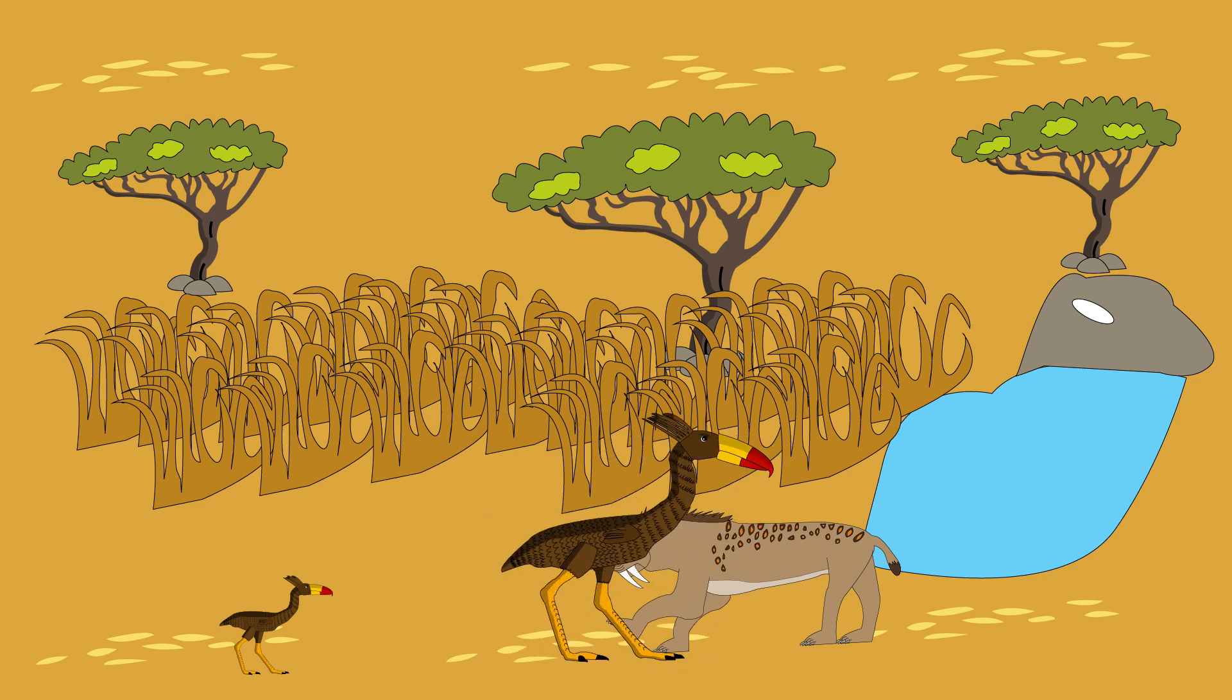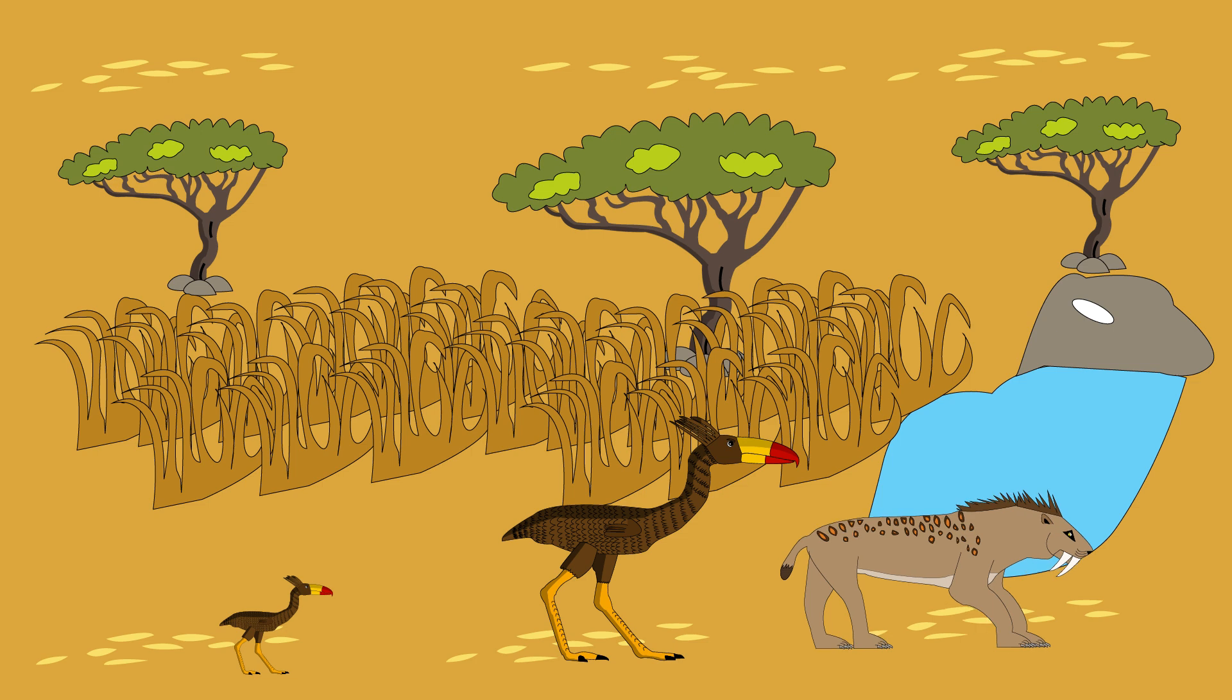The fight is chaos. Kicks, bites, shrieks. Then silence. Smilodon limps away, bleeding. Your mother stands over you, chest heaving. You learn: survival is violence.